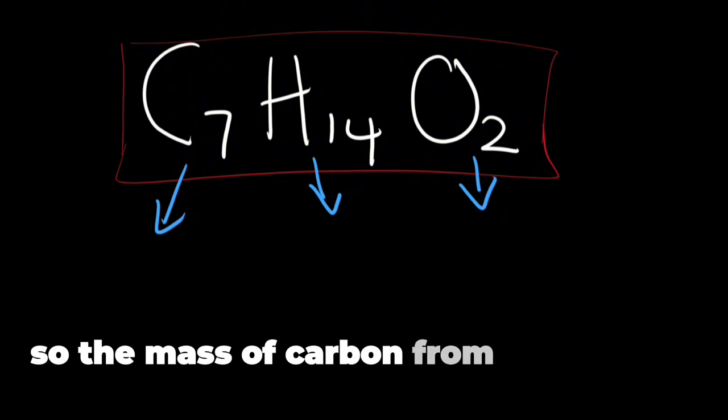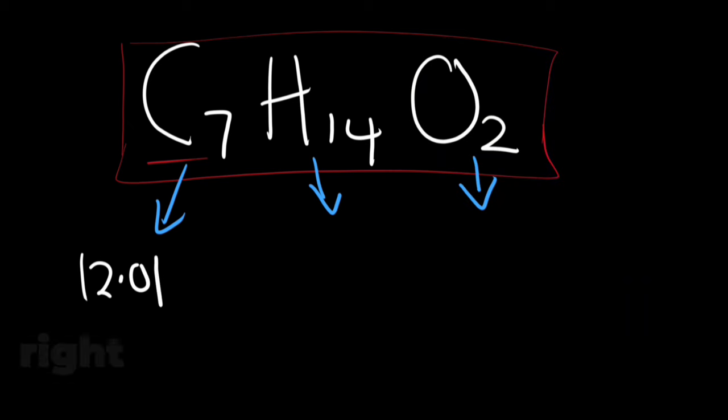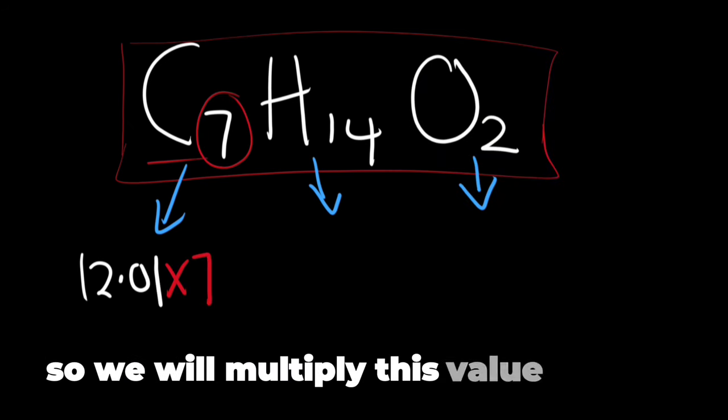So the mass of carbon from the periodic table is 12.01. Right over here we can see we have 7 of carbon so we will multiply this value by 7.